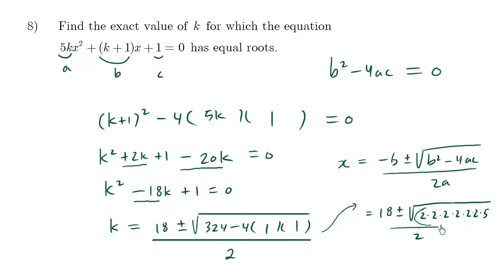So what we're going to do here is we're going to group these 2's. Each pair gets to escape out of this radical symbol, so we get 2 times 2 times 2. What we have is 18 plus minus 8 root 5 over 2. We can divide top and bottom by 2, so what we get is 9 plus minus 4 root 5. This here is the answer. 9 plus minus 4 root 5 are the values of k for which the equation has equal roots.